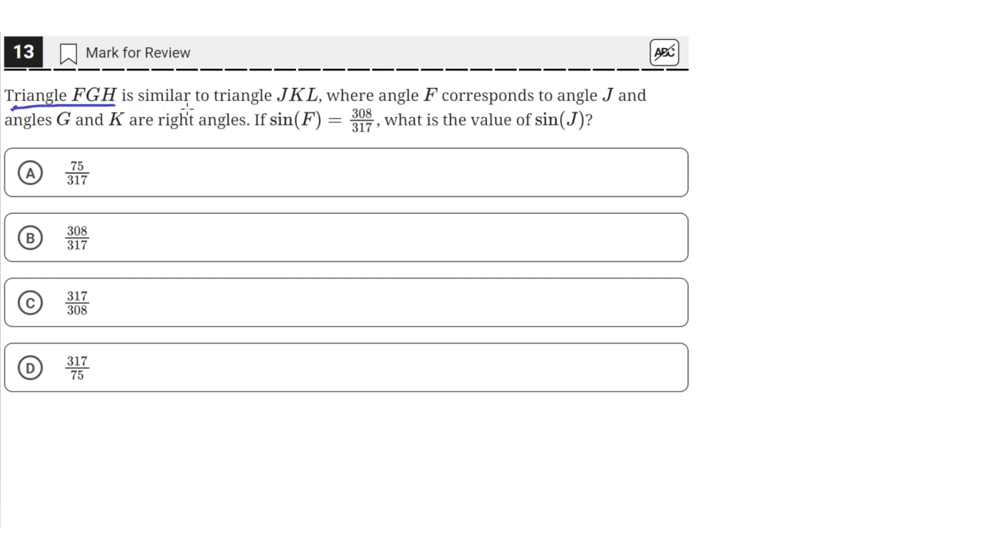Triangle FGH is similar to triangle JKL, where angle F corresponds to angle J, and angles G and K are right angles. If the sine of F is 308 over 317, what is the value of sine of J? Ok.